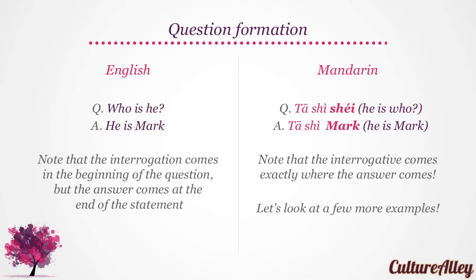Let's compare English and Mandarin to see what we find. Here is how we ask about someone in English: Who is he? He is Mark. Note that in English, the interrogative comes at the beginning of the question, but the answer comes at the end of the statement. If the same were asked in Mandarin, here's how the conversation would go: 他是谁? — He is who? 他是 Mark. — He is Mark. Thus, in Mandarin, the interrogative comes exactly where the answer comes.